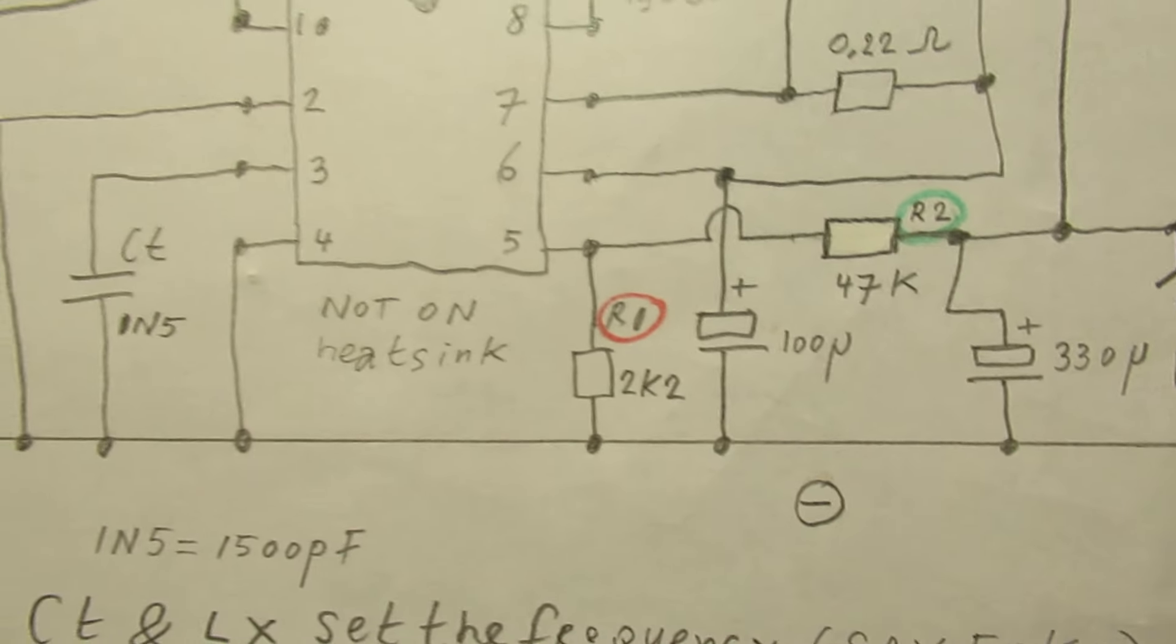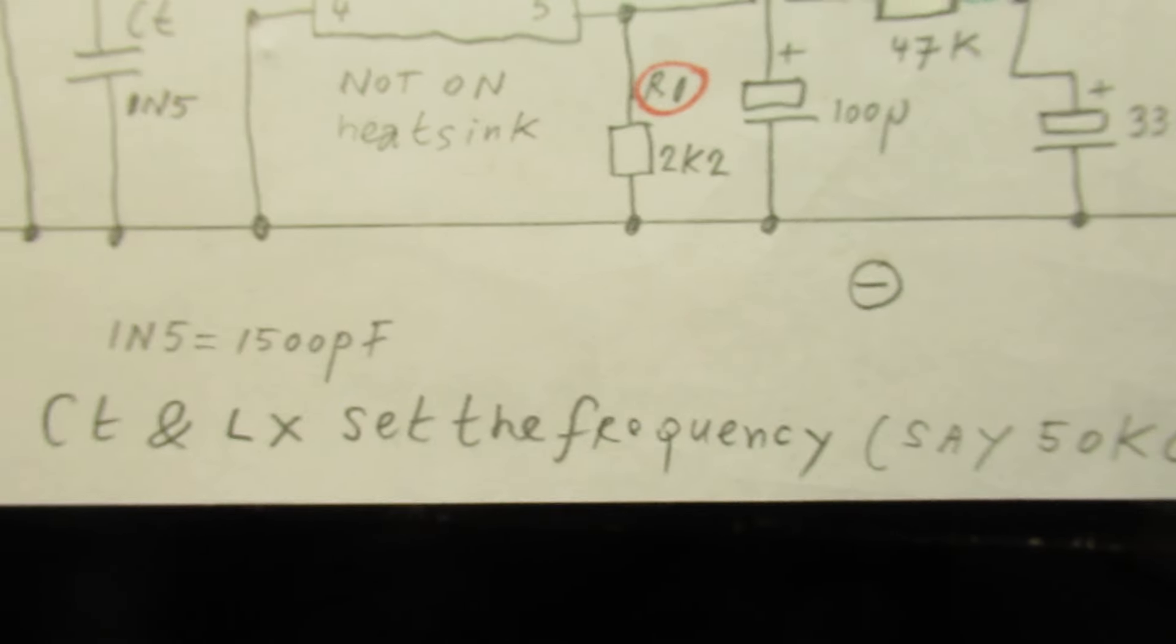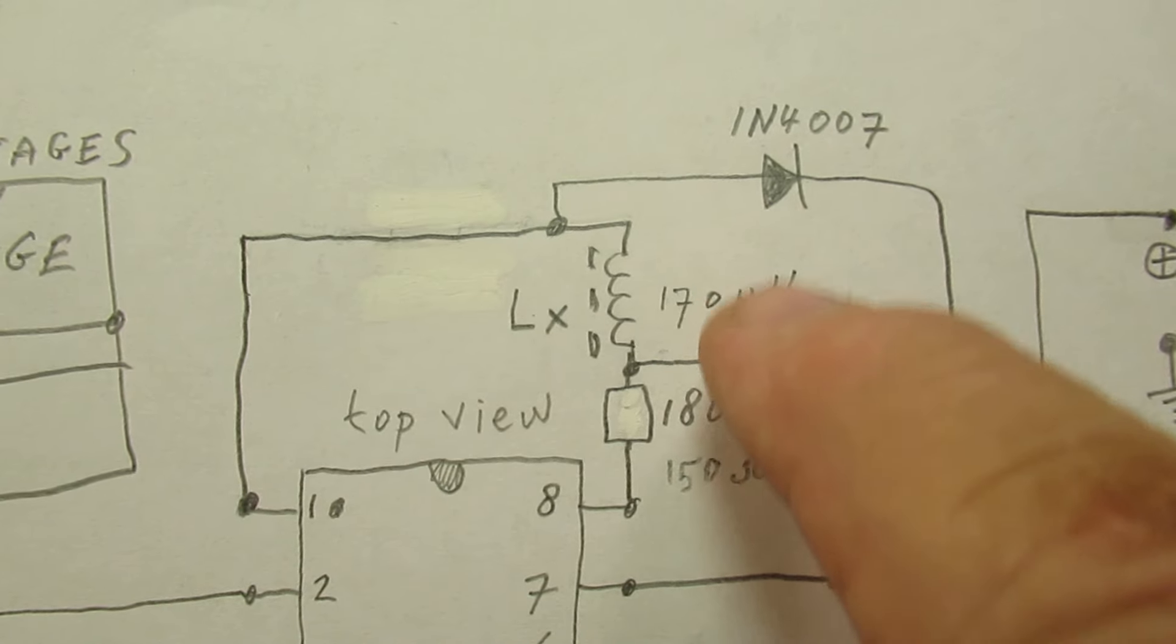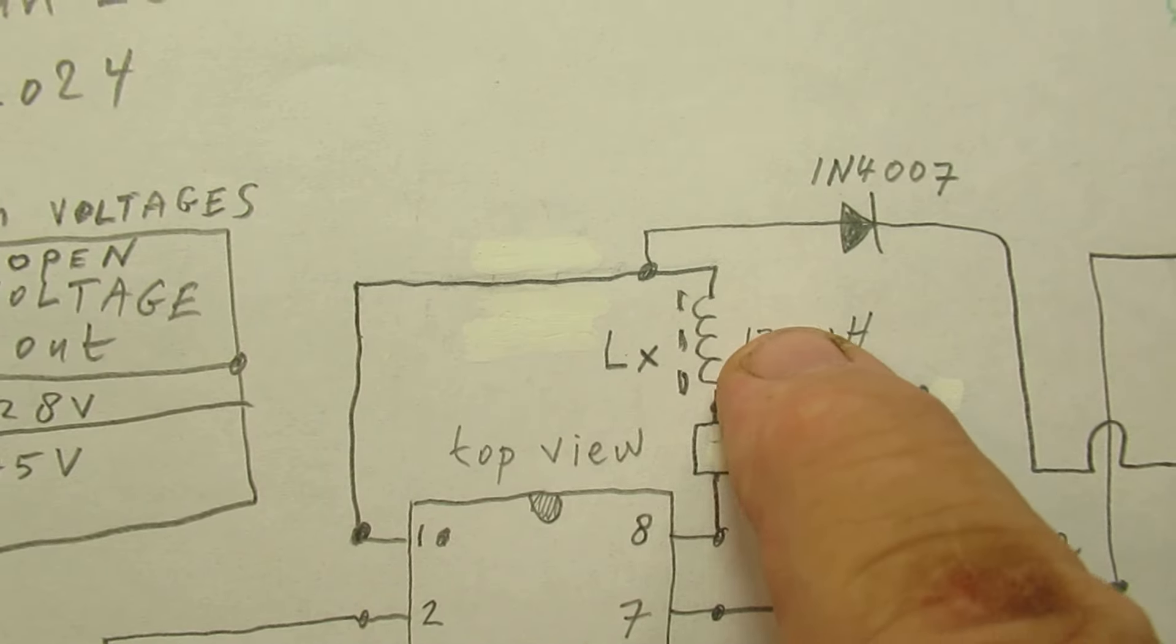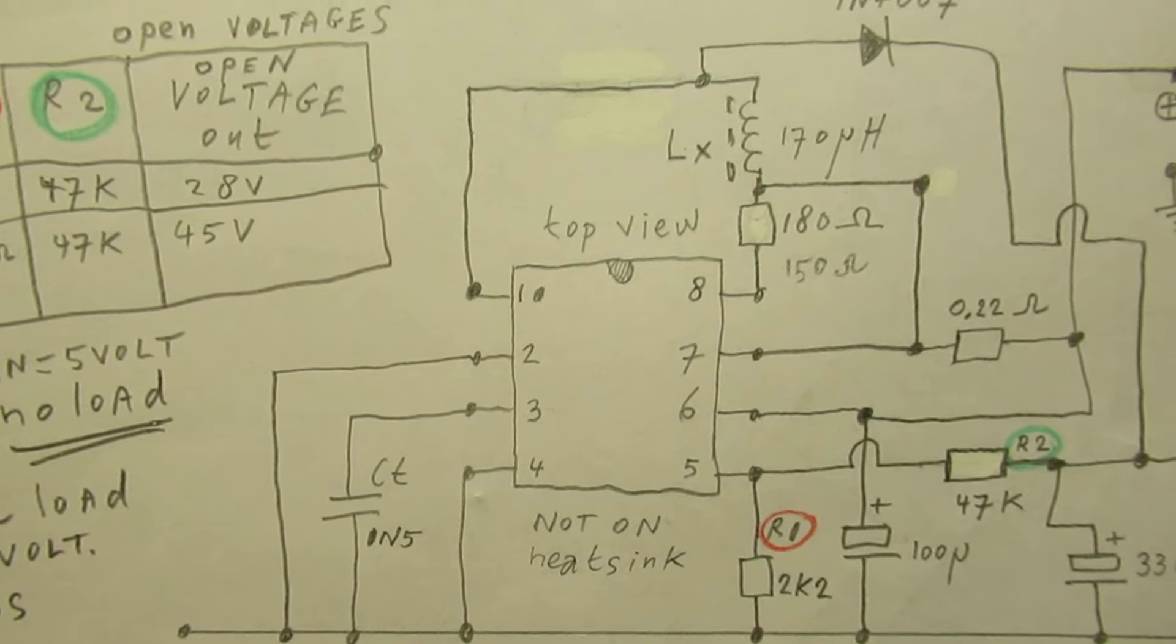Now it is 2k2, and of course it is an oscillator, so this inductor and this capacitor set the frequency where it works.